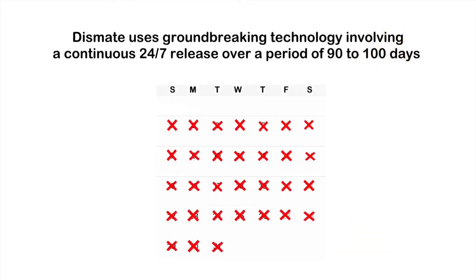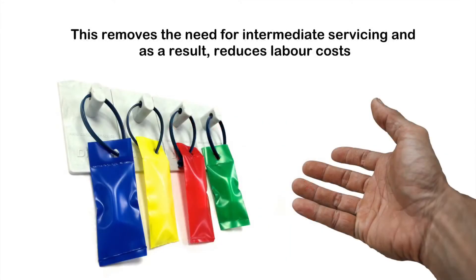Dismate uses groundbreaking technology involving a continuous 24/7 release over a period of 90 to 100 days. This removes the need for intermediate servicing and as a result, reduces labor costs.